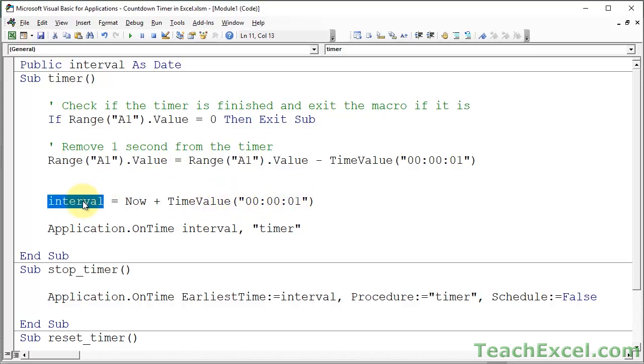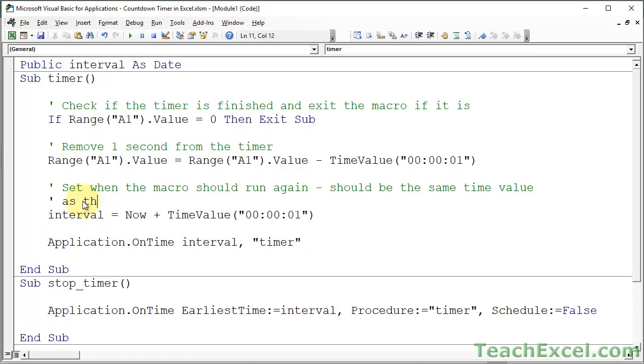And now we go to application dot on time. Actually let me write a note. Sets when the macro should run again. Should be the same time value as the previous line. So this number here should always equal this number here.